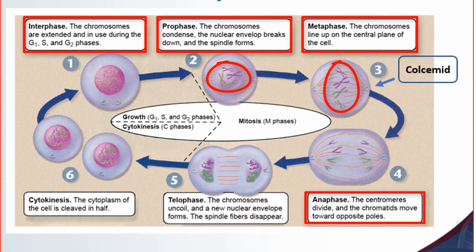And it continues until the cell divides into two. This keeps on going until this cell decides it's no longer able to divide, then it goes into G1 and just functions as a cell.